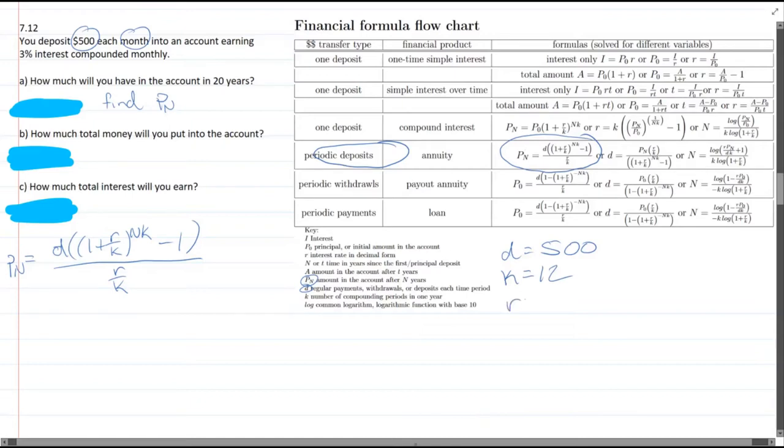3% interest, that's the rate. But you need to turn it into a decimal. So you have to move the decimal place over twice. So that is 3% as a decimal. And what else do we need? N is the amount of time in years. So here we have 20 years. So that's 20 years. I think that is every variable we need.